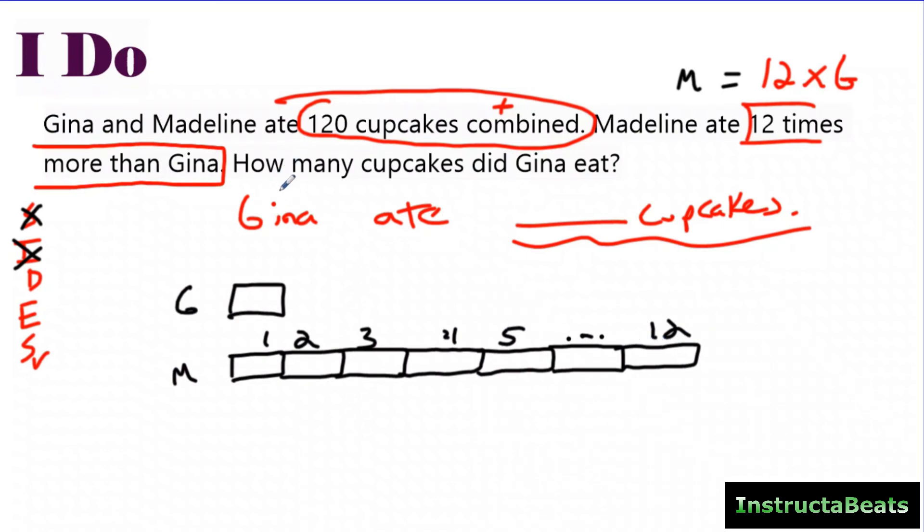Now, this one is unique because it's telling you how many they had combined. So when you added Gina plus Madeline together, that equaled 120. This is why I love this question. It's a different way to ask the question, but it's still multiplicative comparison. So if you draw your tape diagram, you can very easily figure this out. So I know when I add Gina and Madeline together, that was 120. So Madeline had 12 groups. Gina had one group. That's 13 groups together. So I have 13 equal groups, and I have 120 that needs to be shared between 13 equal groups.